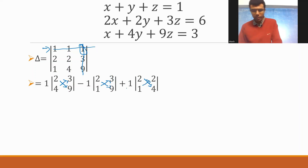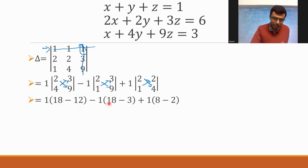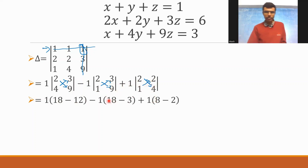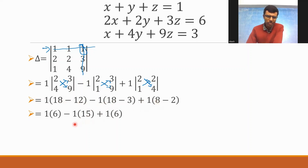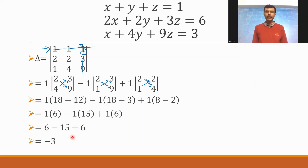So ultimately: two nines are 18, four threes are 12 — so 18 minus 12. Minus one into: two nines are 18, minus one into three is three. And then plus one into: two fours are eight, minus one into two is two. So 18 minus 12 is 6, minus one into 15, plus one into 6. This is nothing but 6 minus 15 plus 6. Six plus six is 12, and 12 minus 15 is minus 3. Hence my delta is minus 3.